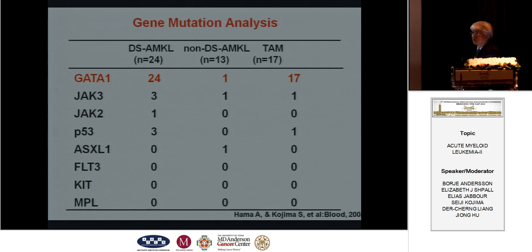We checked gene mutation analysis by conventional methods. All patients with Down AMKL and TAM have a GATA1 mutation. Also, a subset of patients with AMKL have JAK3, JAK2, and P53 mutations. These may be the additional gene mutations which contribute to progression from TAM to MKL.